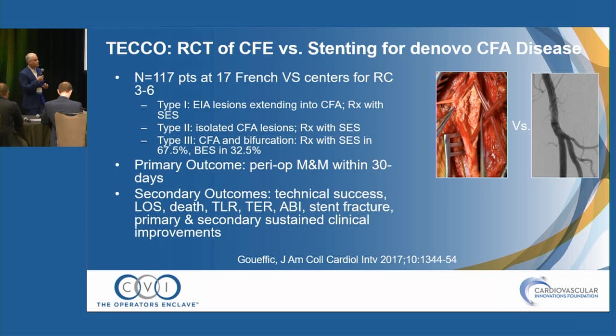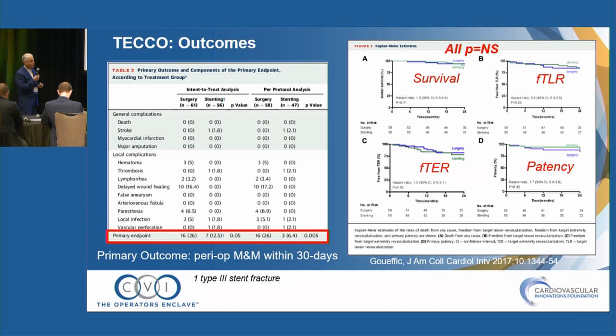Is there any data on stenting for the common femoral? There are a couple of studies. The TICO study was done in France across 17 vascular surgery centers — performed by vascular surgeons, not cardiologists. With a primary endpoint of perioperative morbidity and mortality in the first 30 days, the endovascular group actually did better. Looking at survival, freedom from TLR, patency, and freedom from revascularization of that extremity, they were all pretty much equal.